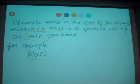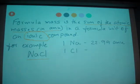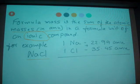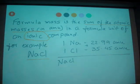In NaCl, we have one Na with atomic mass 22.99 amu, and one Cl with 35.45 amu. When we add them together, NaCl has 58.44 amu.